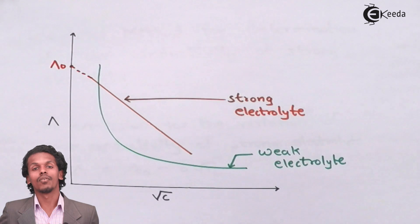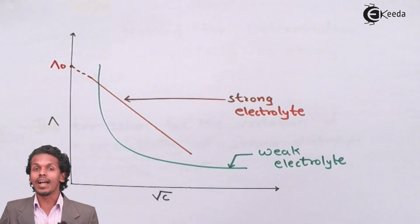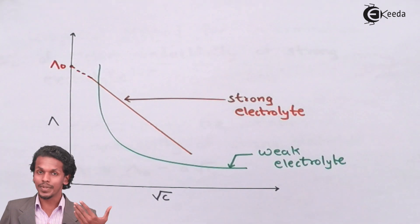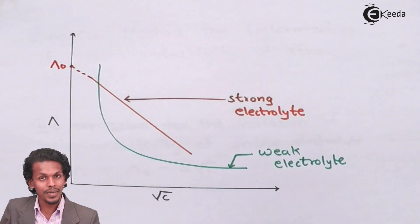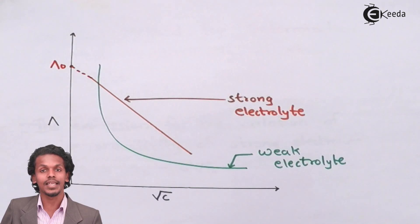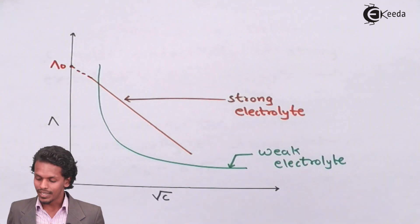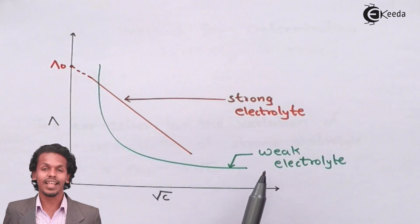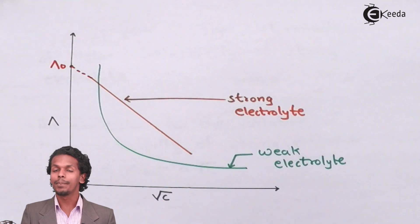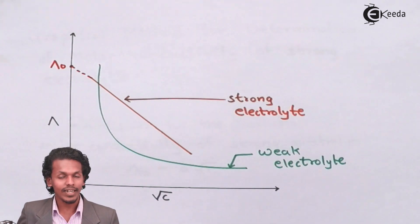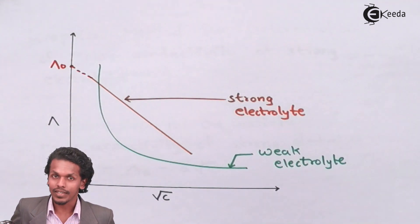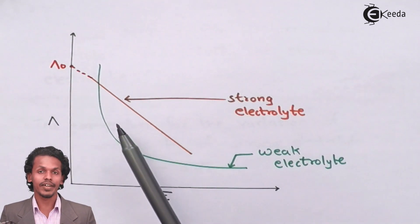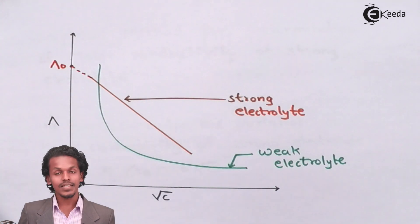This maximum limiting value for molar conductivity gives an idea of the level to which the concentration should be diluted to obtain the maximum molar conductivity. But in the case of a weak electrolyte, we cannot observe this. Hence, the graphical method is only valid for strong electrolytes, not for weak electrolytes. For strong electrolytes, we can measure the molar conductivity at any point on this graph.